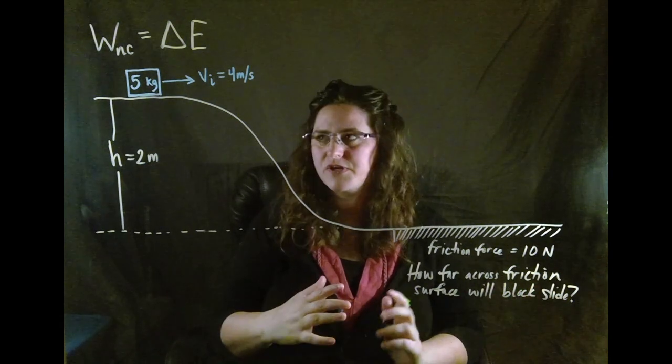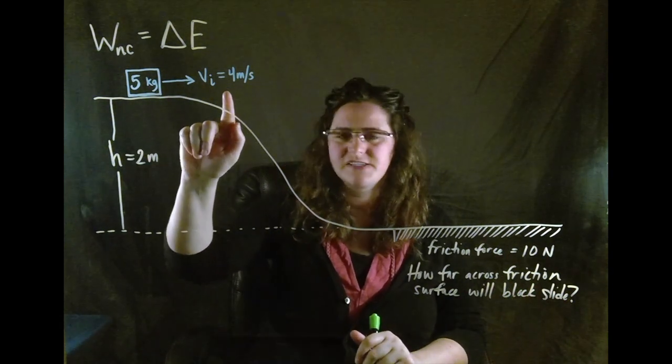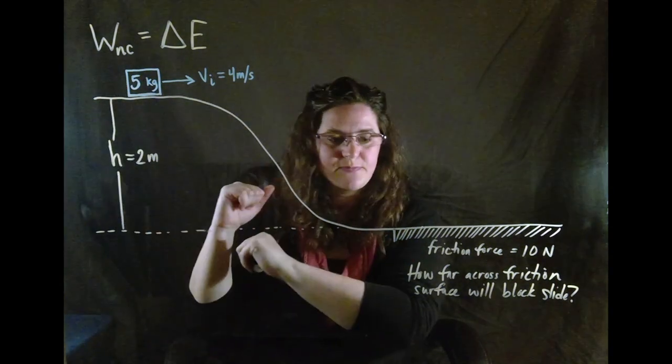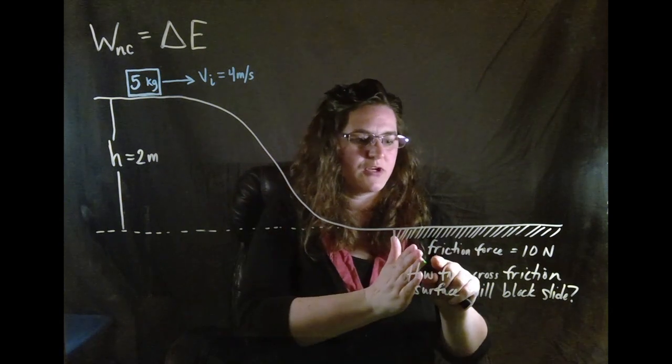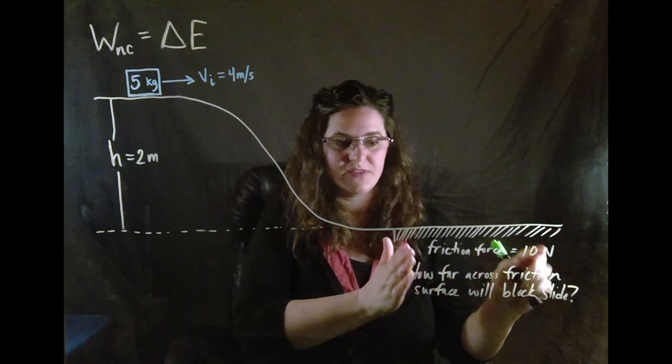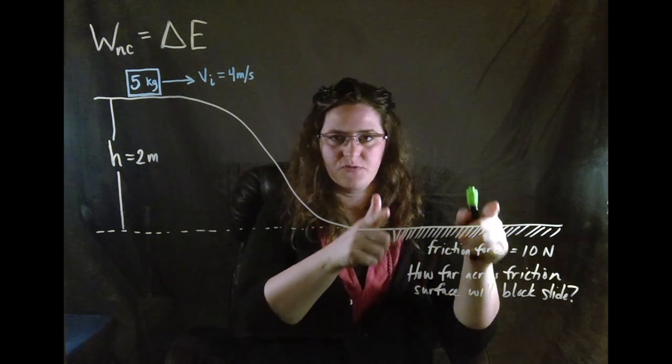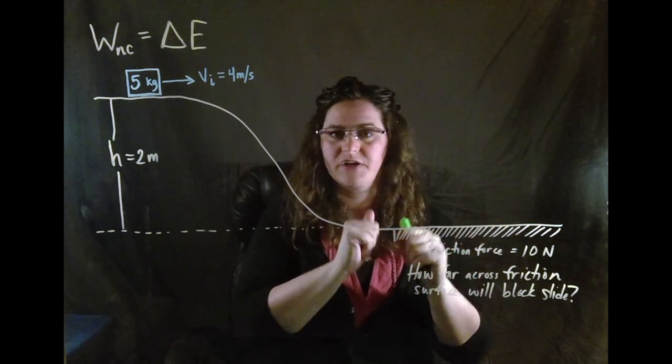So we have a few things that we know. We know the initial velocity of the block and we know how high in altitude this hill is and we know what the friction force will be that is acting on the block and we want to know how far across it will go here. So that's the thing we're trying to find.